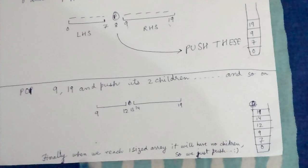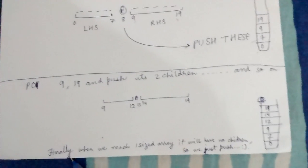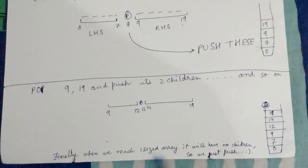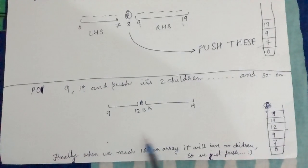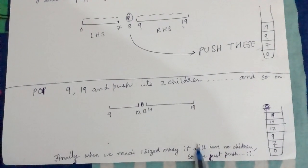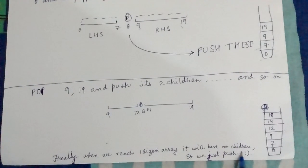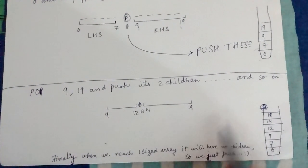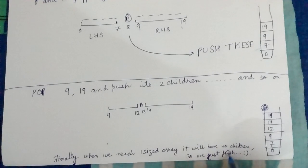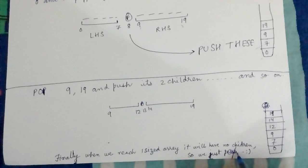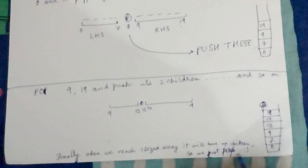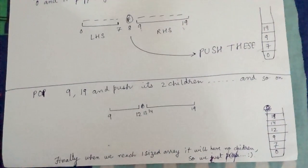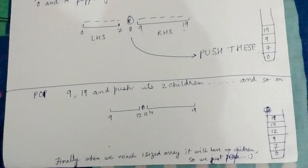There is a base case also where we have reached a one-sized array. We just pop and it will have no children, so we need not push because it doesn't have any children. This way the iterative algorithm works. Thank you friends.